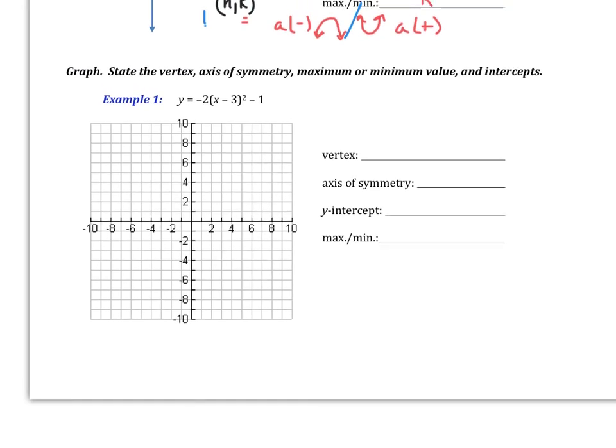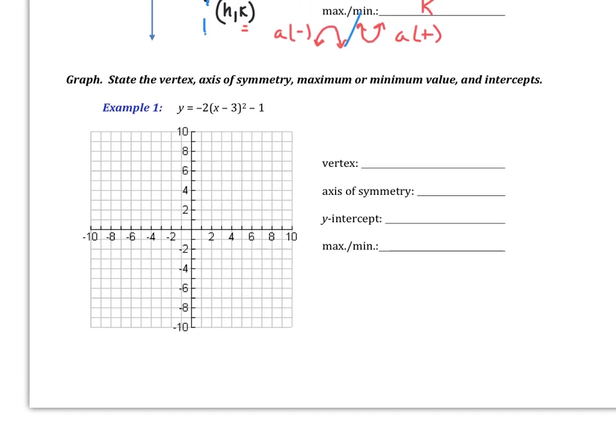So, we've got y equal to negative 2(x minus 3) squared minus 1. A couple things you should be thinking already. The fact that they gave us a negative 2 tells us that our parabola is going to be upside down. So your vertex is going to be at positive 3 and then negative 1. Your axis of symmetry is going to be at x equal to 3.